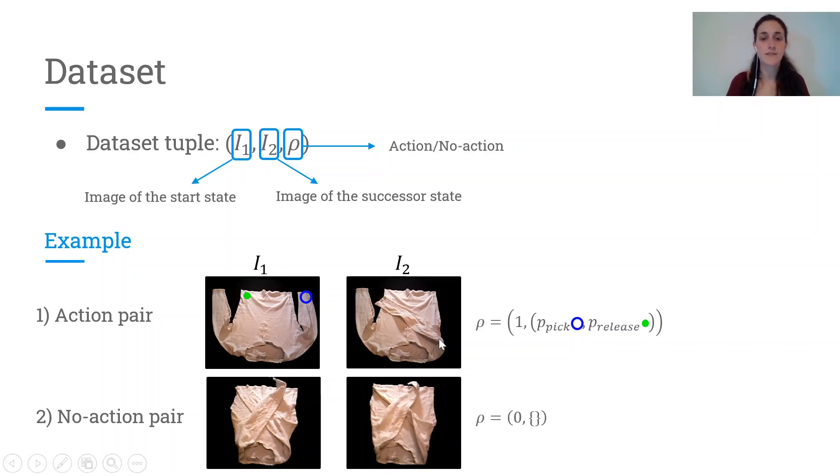For example, here we have the first example of action pair, where there is an action between these two states. And then we have a no action pair, where there is no action between these two states.